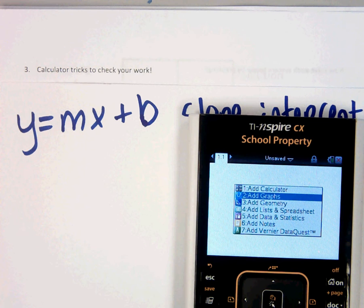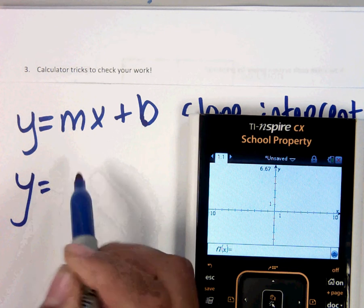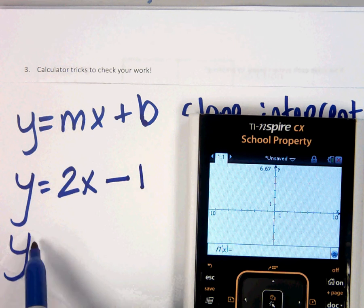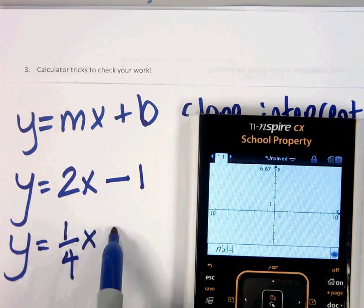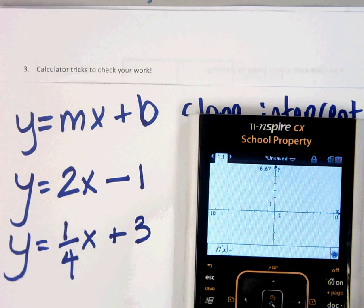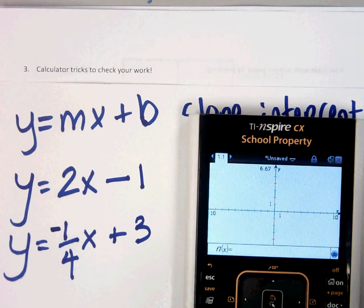Go to add a graph. Okay, so we need some equations. Let's make up some. So y equals 2x minus 1 and y equals 1 fourth x plus 3. So let's make this negative 1 fourth x plus 3. Let's see what happens.